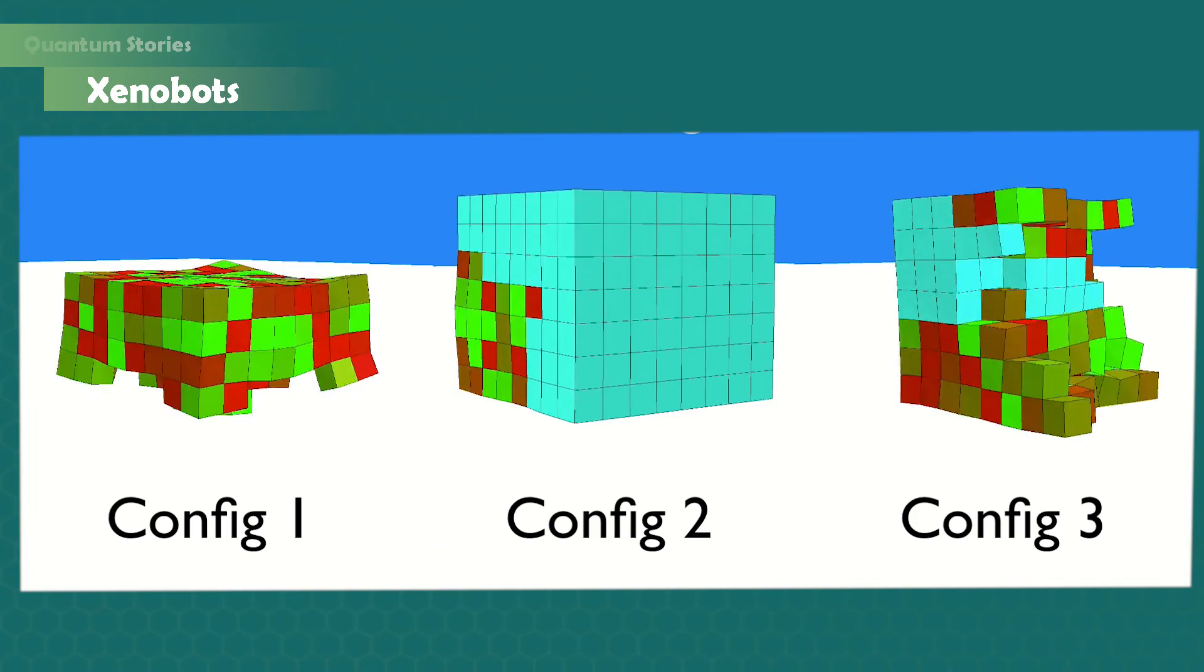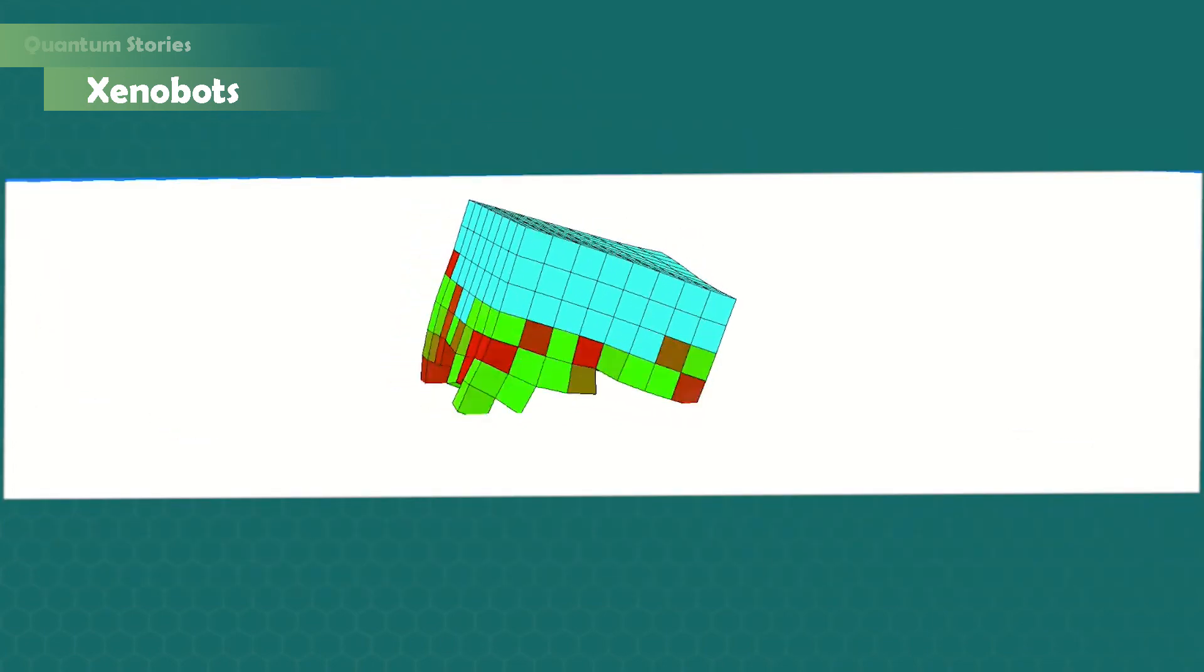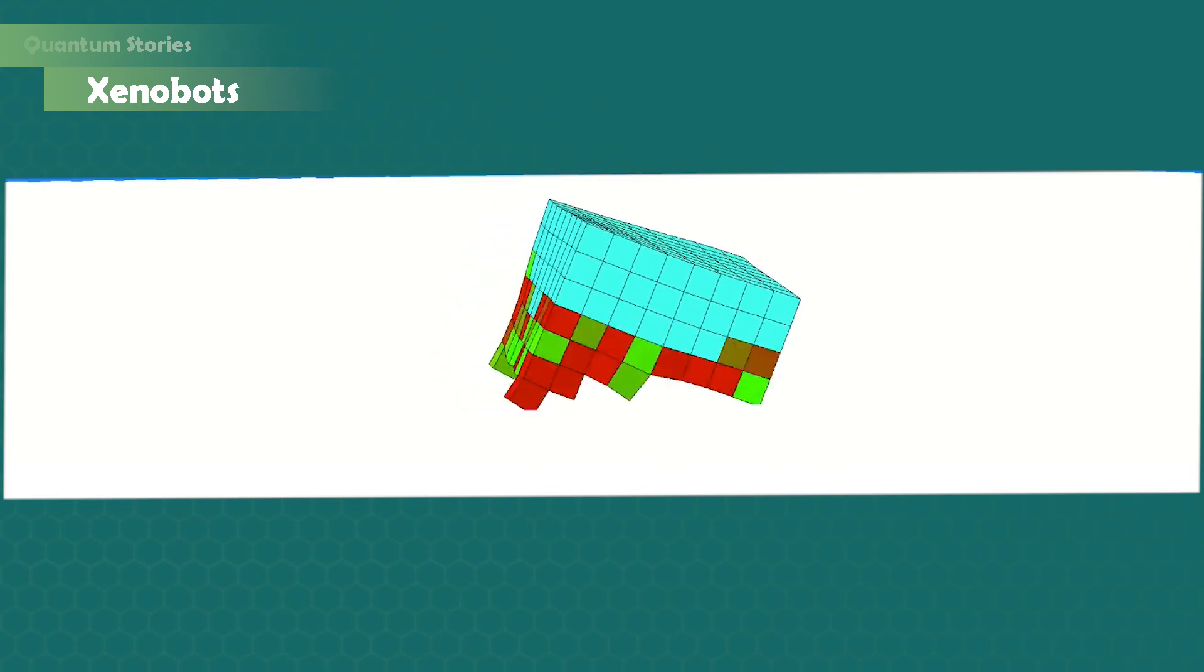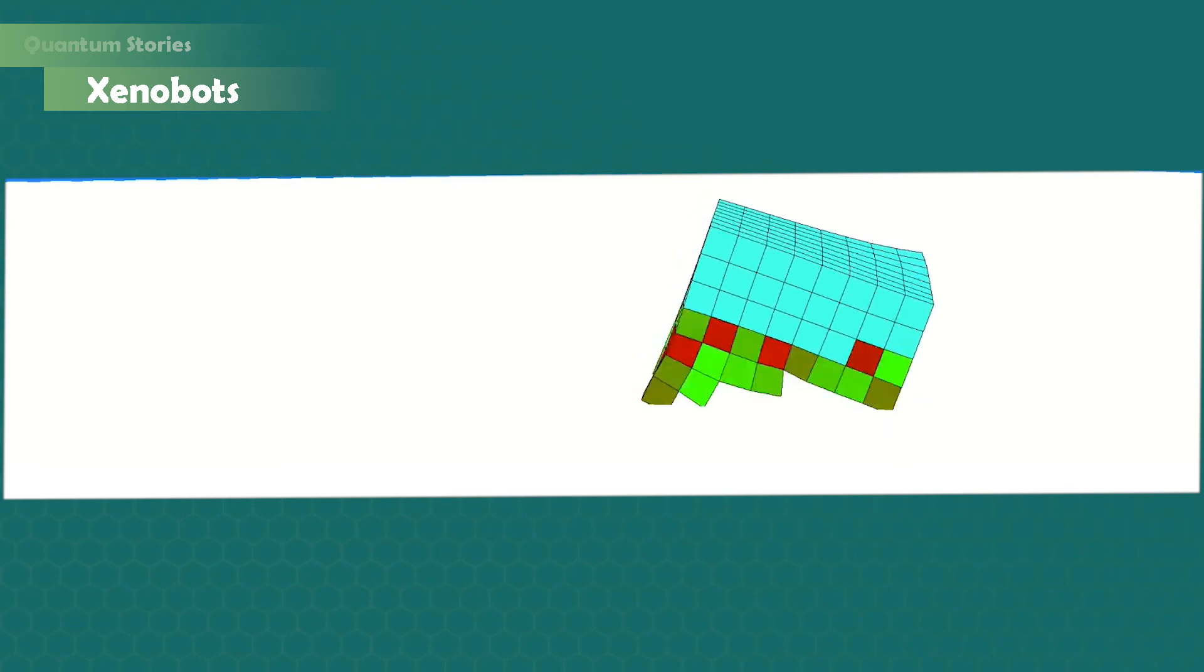So here you can see some examples of their initial population. One of the final winners is this one. You see how he is able to move from left to right. Now the next step is to make them in real life.